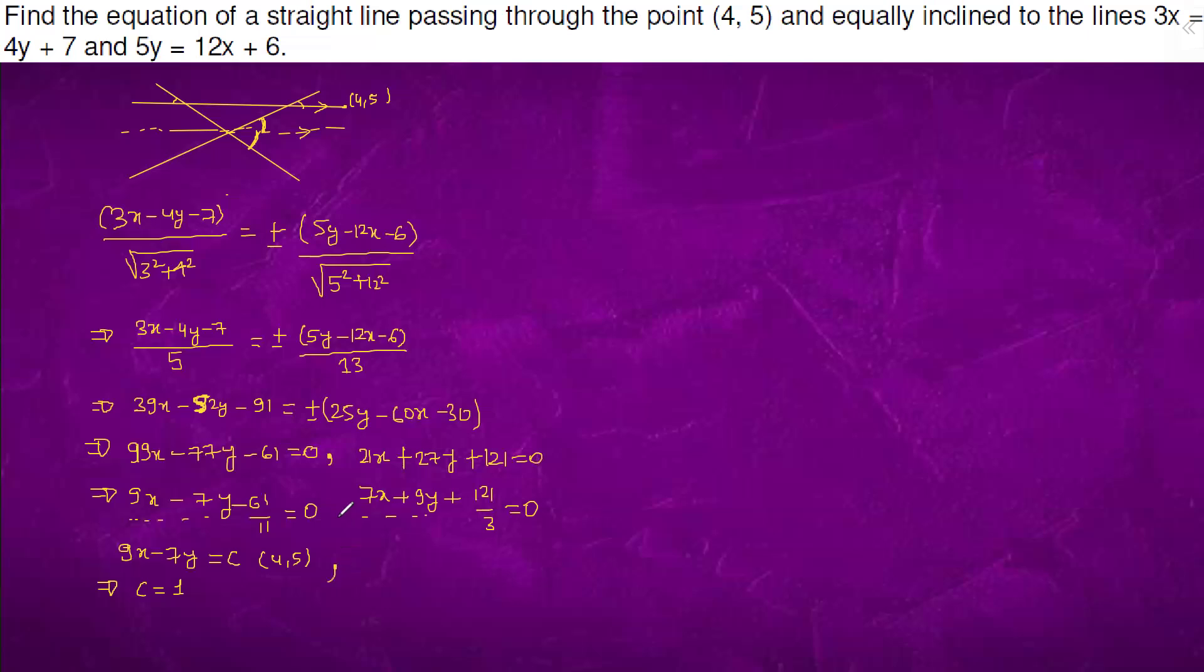And second line passing parallel to this is 7x plus 9y equals to c, which is 4 comma 5. So this is 28 plus 45, which is 73. So c is 73. So the equation of required line is 9x minus 7y equals to 1, and the second equation of line is 7x plus 9y equals to 73.